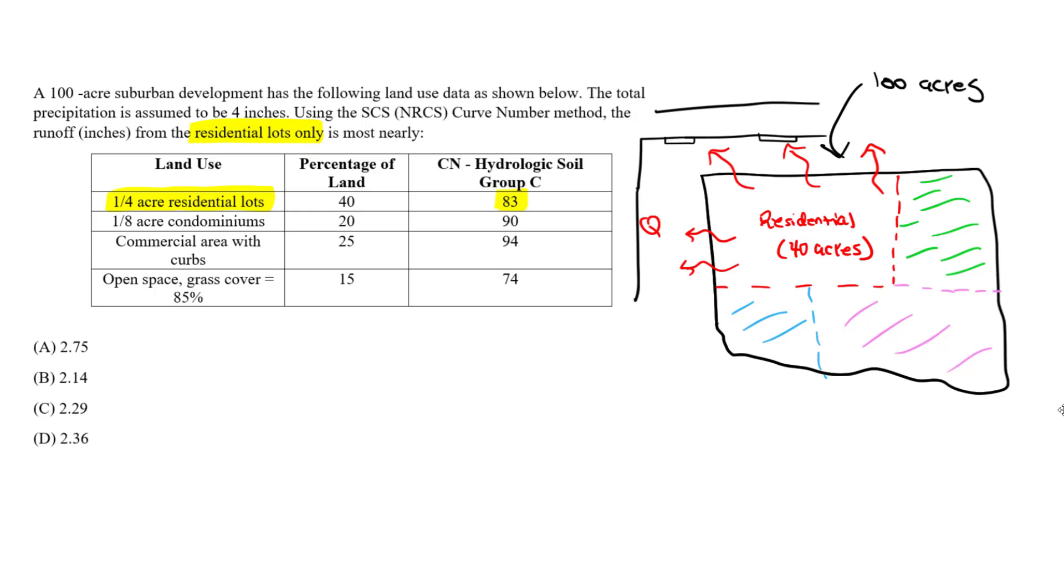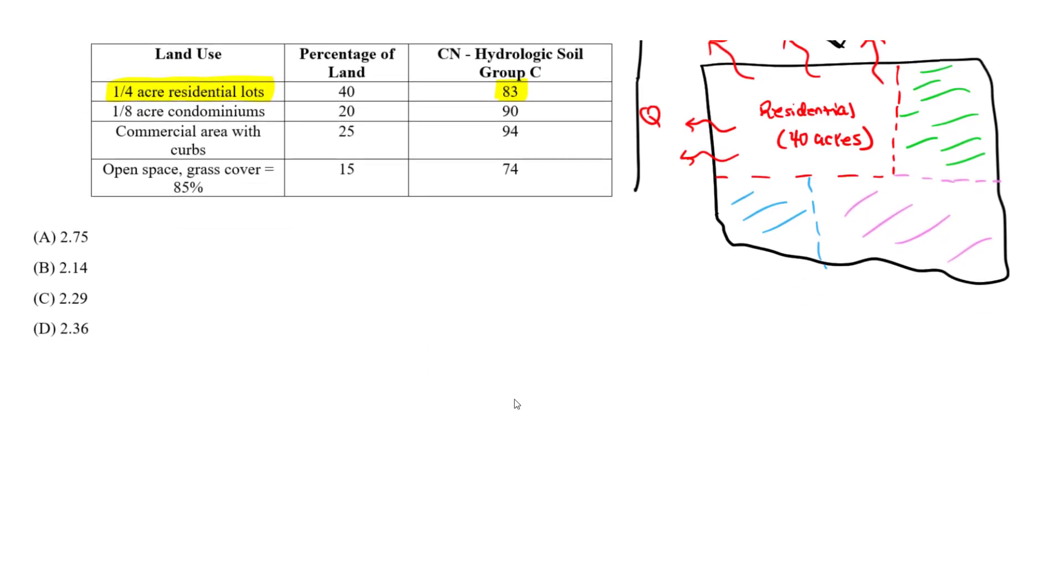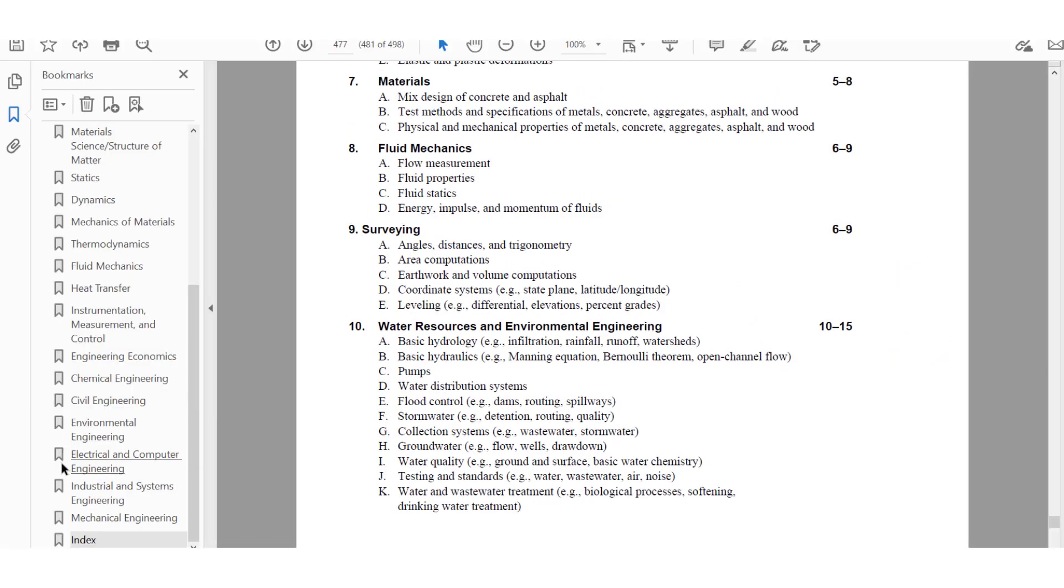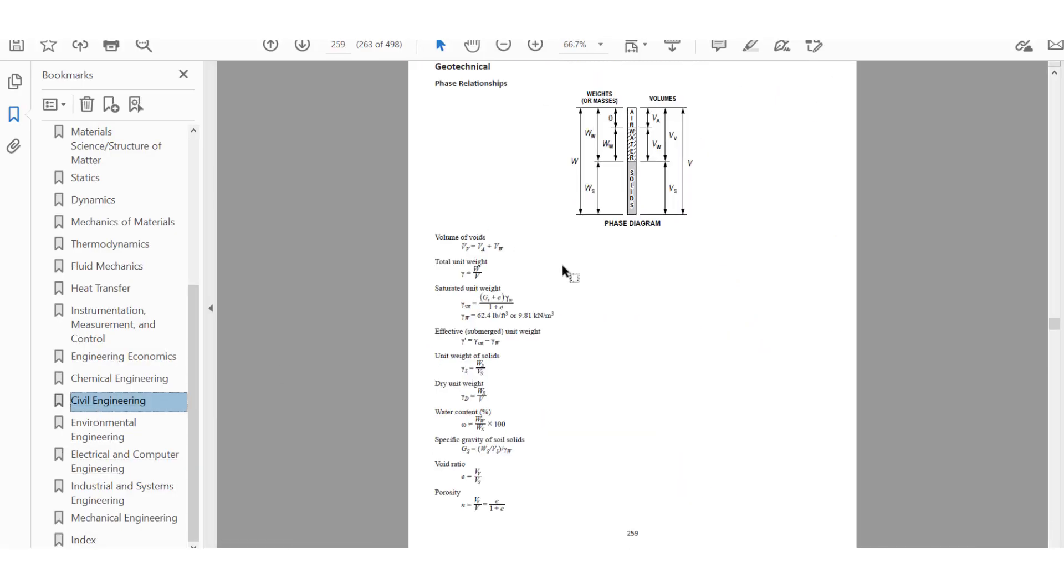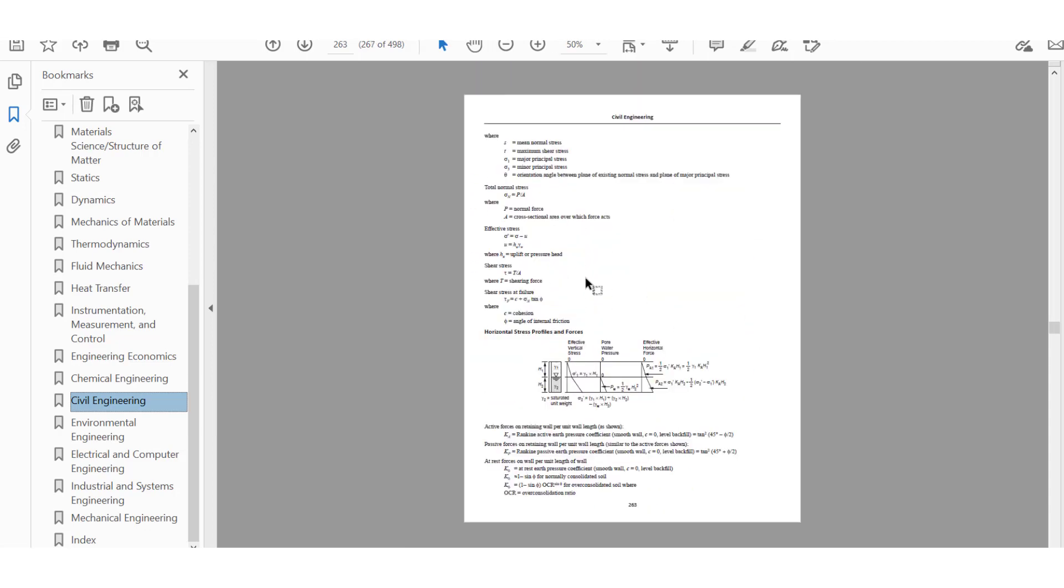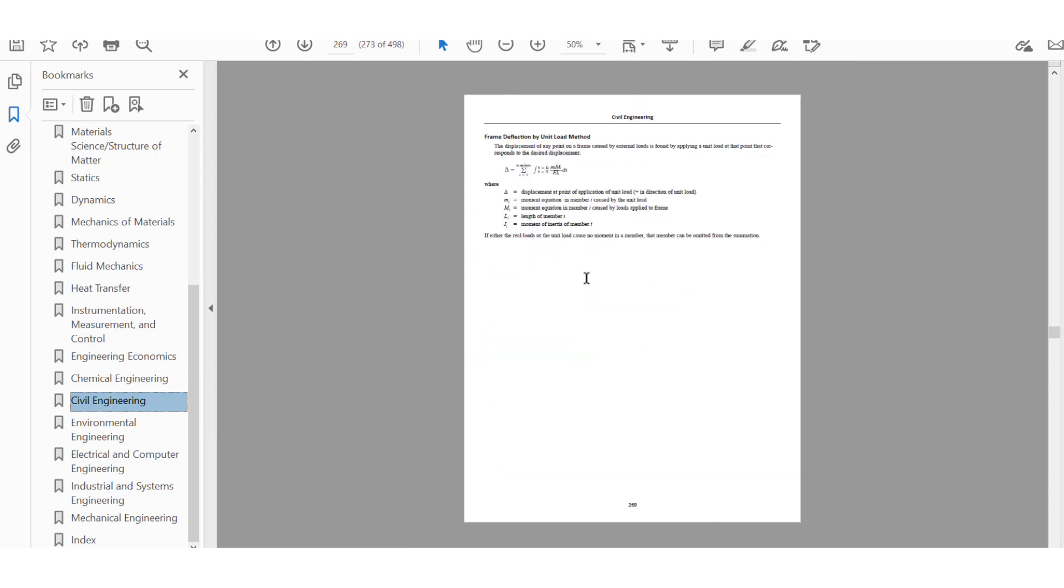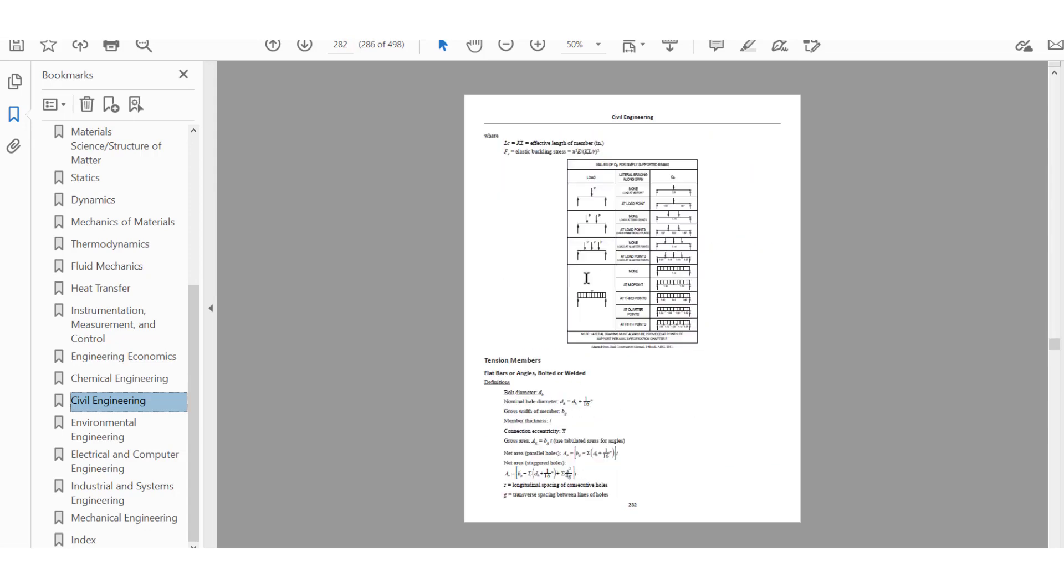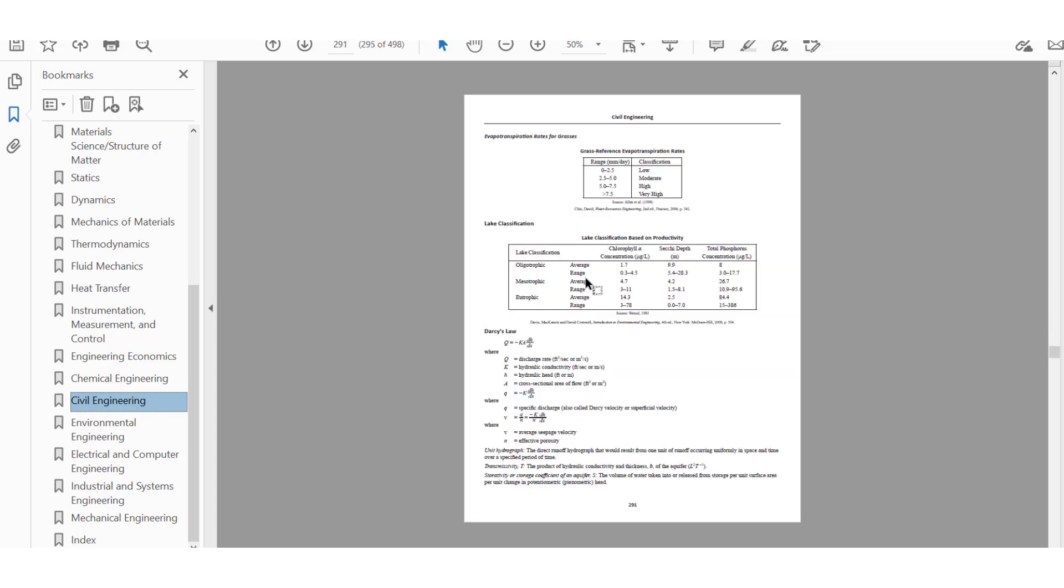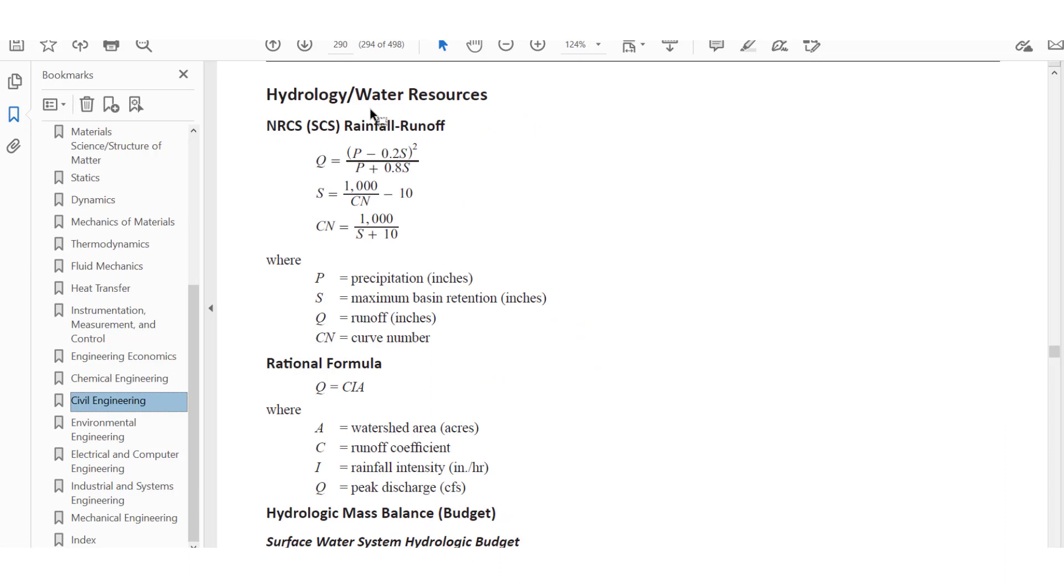That's why we need this Q runoff value from the residential lots only for this question. So let's solve for that using that SCS method. And the SCS method, we can look in the civil engineering section. So if you look and go all the way down, this is geotech, this is structural.